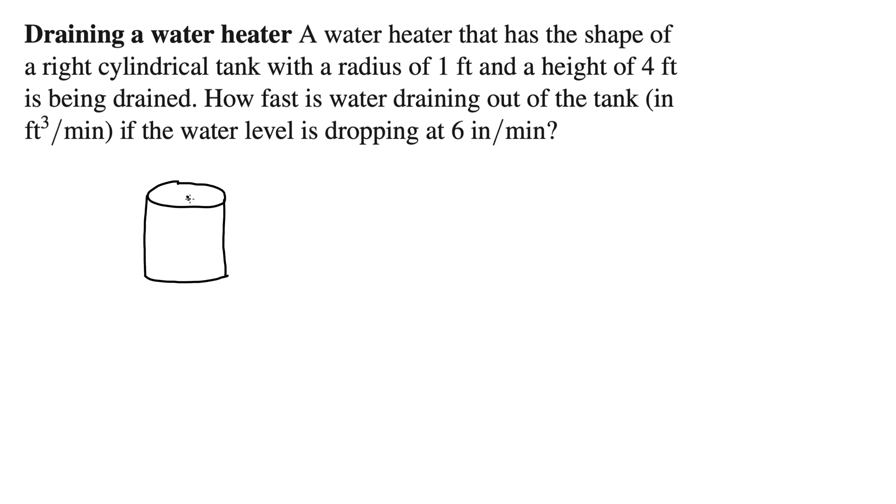Okay, so here's our cylinder. We have a radius of 1 foot here, so let's say 1. What's happening? Well, we have water in this or some liquid. Oh, water heater. Okay, so it is water and it's being drained. Right, so maybe we can put a little spout on here and out comes the water.